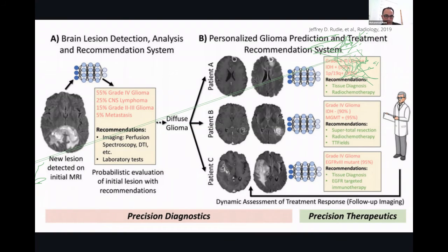To wrap up, we have discussed the importance of brain lesion detection, analysis, and recommendation systems using neural network and machine learning-based systems to predict the grade of the tumor and also the risk or probability for metastasis, and based on that, to recommend further imaging if needed. This is a probabilistic evaluation system for coming up with subsequent recommendations.